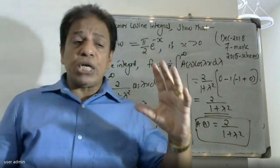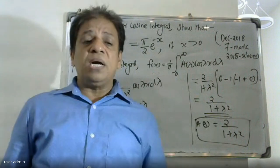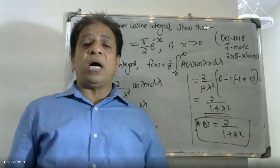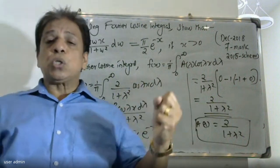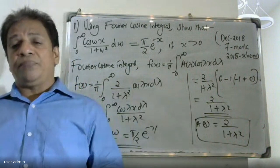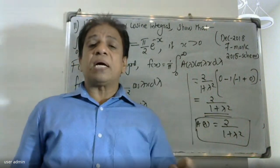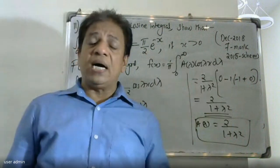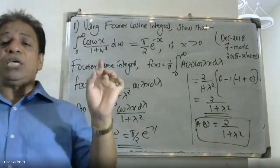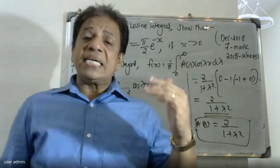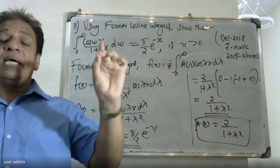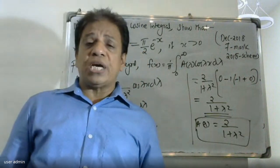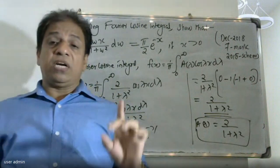To summarize: using the Fourier cosine integral formula f(x) = (1/π) ∫₀^∞ A(λ) cos(λx) dλ with A(λ) = 2 ∫₀^∞ f(t) cos(λt) dt, and setting f(x) = e^(-x), we applied the integration formula ∫ e^(ax) cos(bx) dx = e^(ax)/(a²+b²) · [a cos(bx) + b sin(bx)].